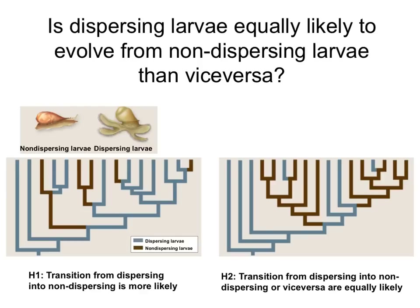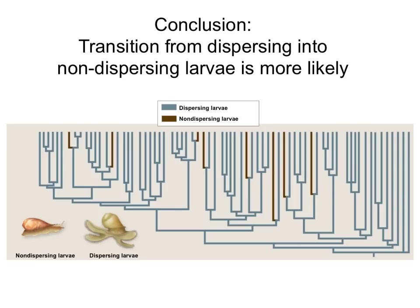On the other hand, if it is easier to transition from dispersing into non-dispersing, you would see that the branches start up with blue and then they turn into brown. So it is more likely that the brown originates from a blue than for a blue to originate from a brown. When we compare the actual phylogeny, we find that it is more likely to transition from having a dispersal larvae into not having one. Actually, there are no instances in this tree in which an organism didn't have a larva and all of a sudden started having one. You can see why — it would be easier to lose the larval stage than it would be to gain a complete developmental stage.